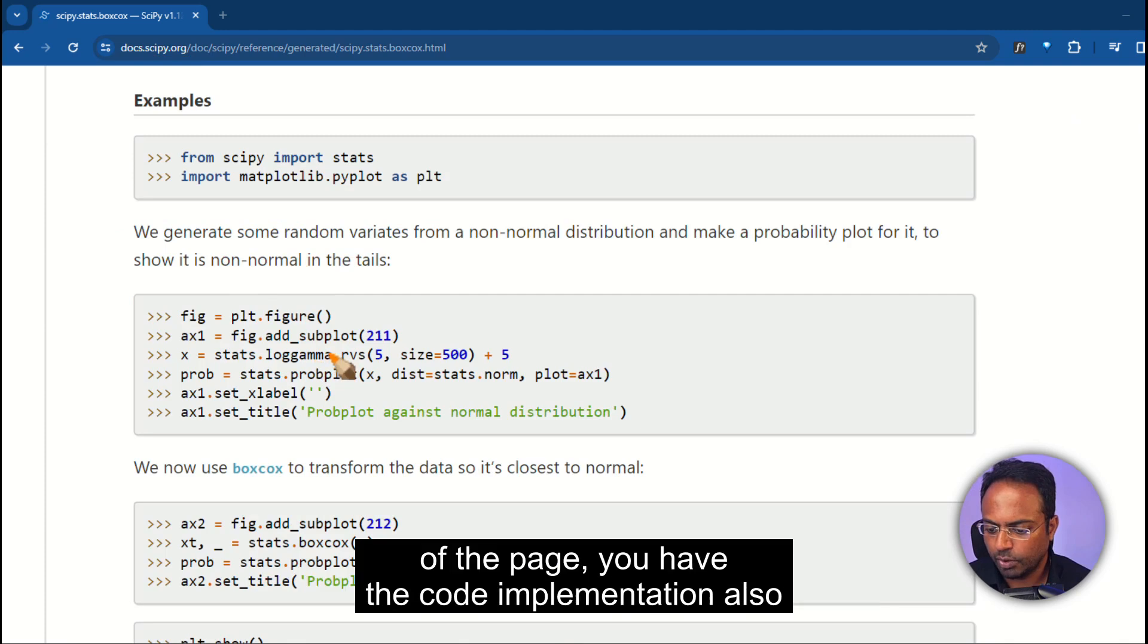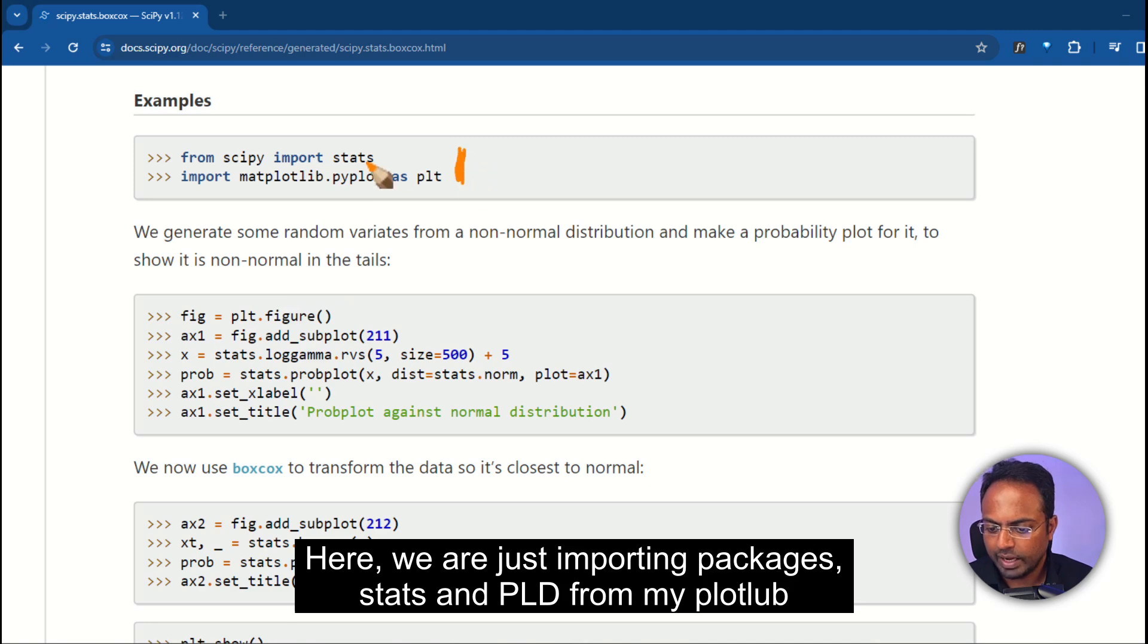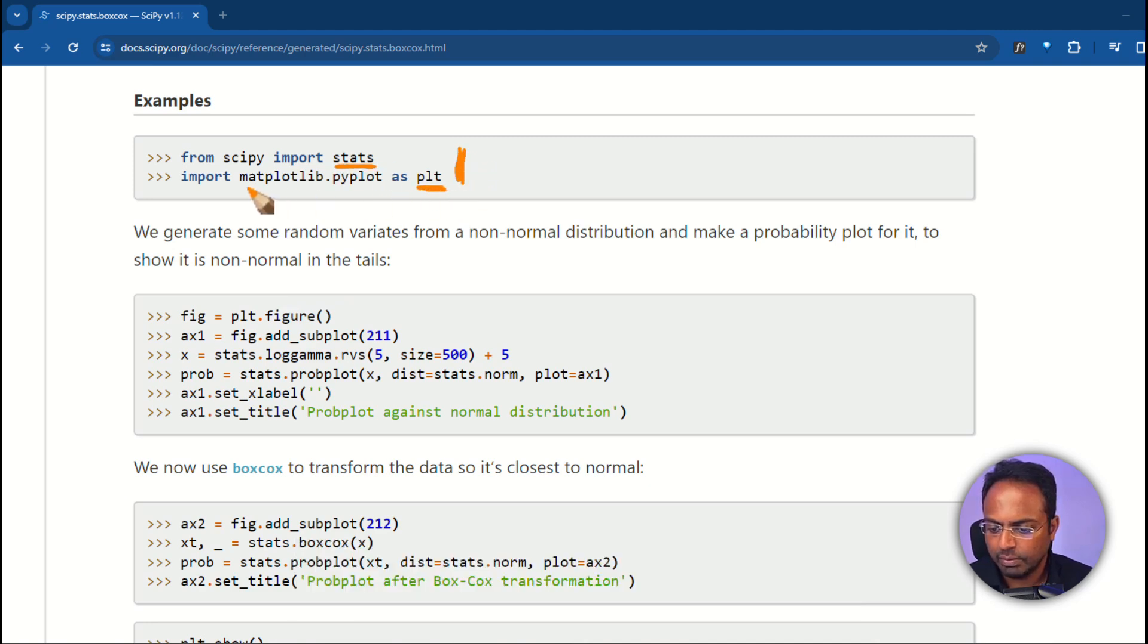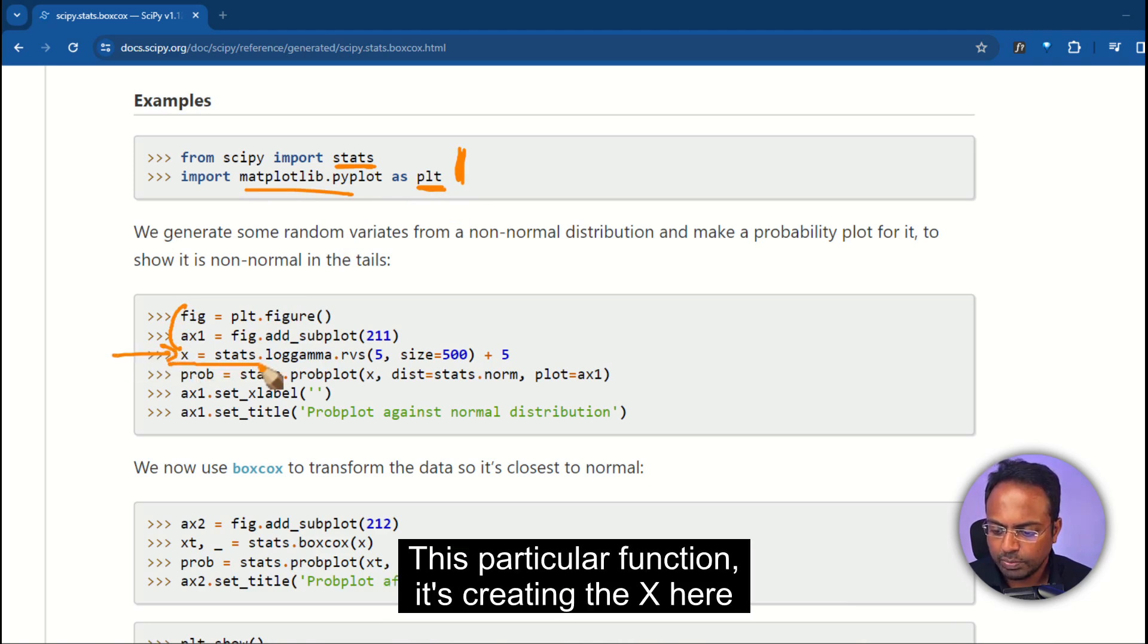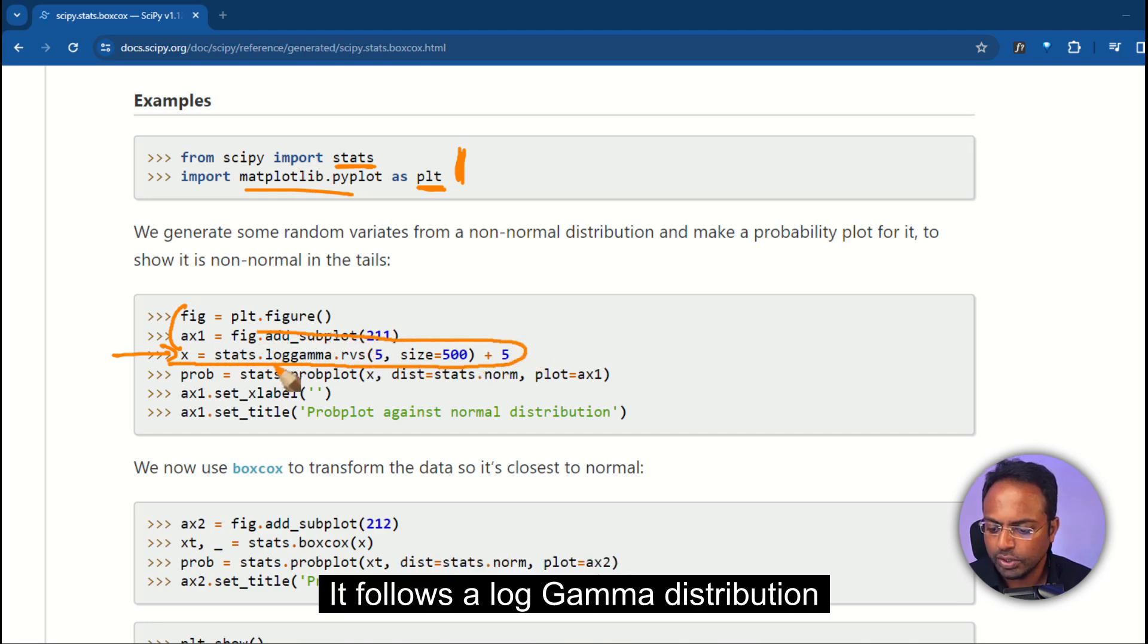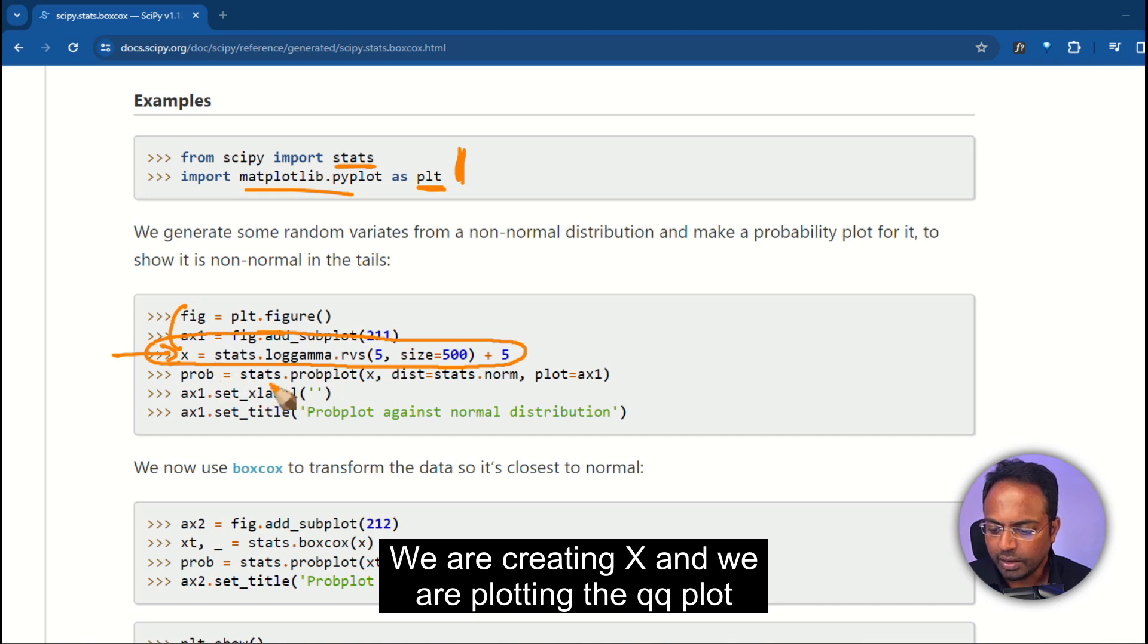Now, if you scroll down towards bottom of the page, you have the code implementation also. Here, we are just importing packages, stats, and plt from matplotlib. Then, initialize the figures. Here, we are creating x. This particular function is creating the x here. It follows a log gamma distribution. We are creating x, and we are plotting the QQ plot.